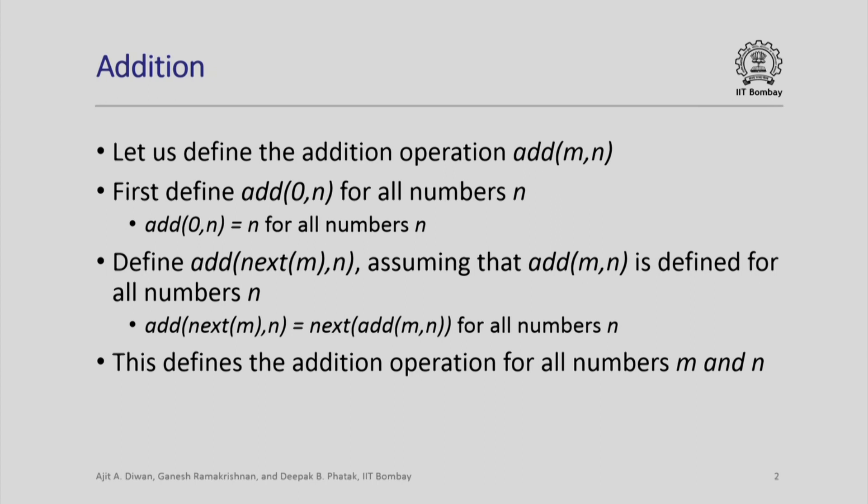We want to define the addition operation: add two numbers m and n. We will first define what is meant by adding 0 to n for all numbers n. We define add of 0, n to be n for any natural number n. In general, to define any operation, we need to define it for the case when the value is 0, and then assuming it is defined for the case where the value is m, we need to define it for the value next of m. If that is done, then it gets defined for all possible values of the number m.